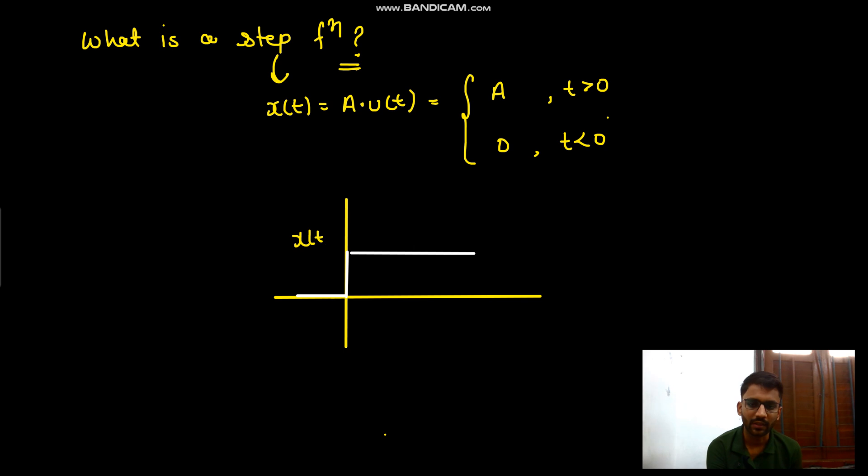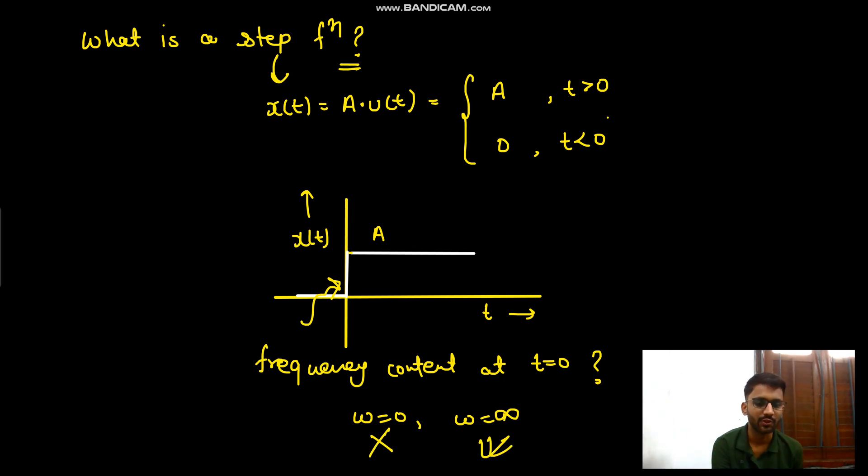This is your x(t), this value is A. So all of you know about this. Now the question is, what is the frequency content at t equals to 0? Is it omega equals to 0 or omega goes to infinity? It is not omega equals to 0, it is omega goes to infinity. Why? Let me explain it.